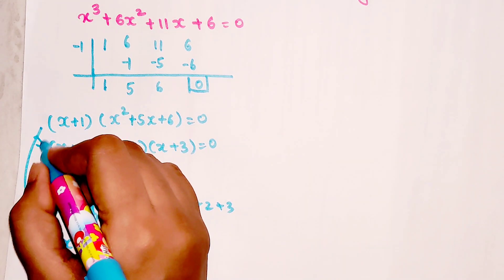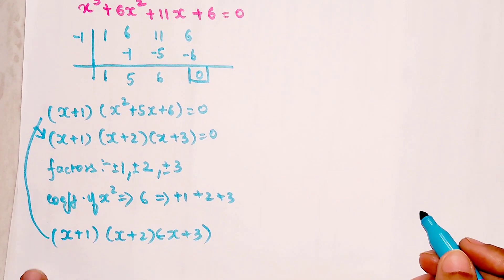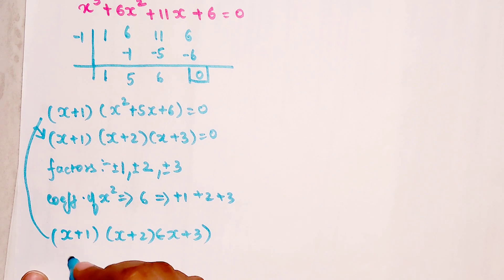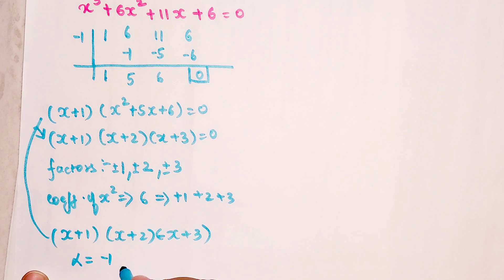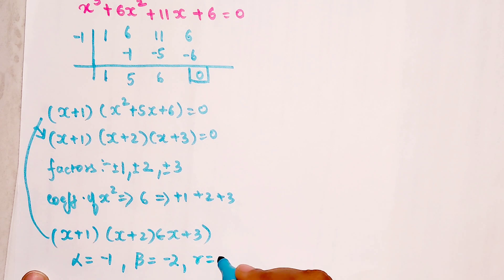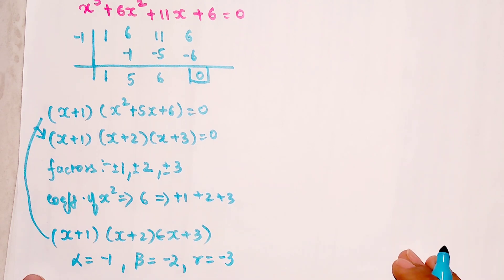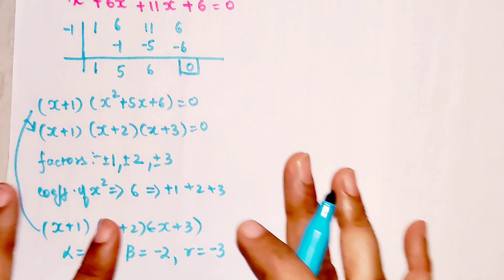So we write those numbers with their signs after x to get the factorization directly: (x+1)(x+2)(x+3) = 0. The roots are: alpha = minus one, beta = minus two, and gamma = minus three. See how easy this became!